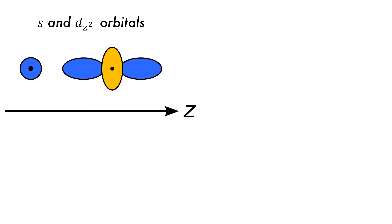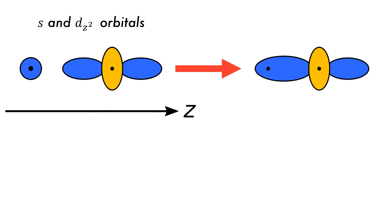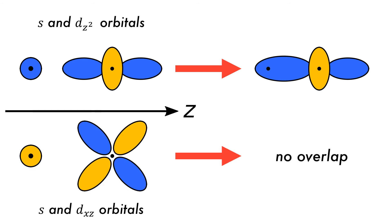Molecular orbitals can also form between atomic orbitals of different types if their energies and symmetries are similar. If the z-axis is kept as the bonding axis, an s orbital and the dz² atomic orbital can overlap to form a molecular orbital. Other combinations are less successful, such as between the s and the dxz atomic orbitals, as the s orbital approaches along the node in the d orbital.